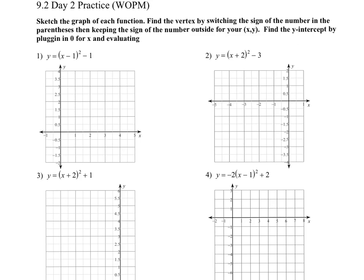Let's start on number two. This is what we call vertex form — it makes it very easy to find the vertex. As the instructions say, find the vertex by switching the sign of the number inside the parentheses. So in this case, my x value is going to be negative two. You just always switch that sign — we understand this as being a shift left two.